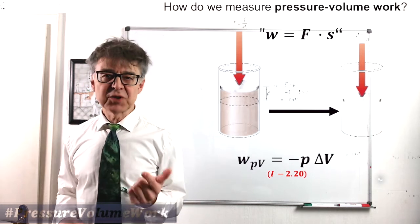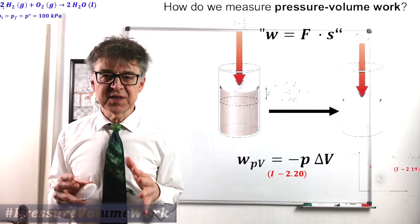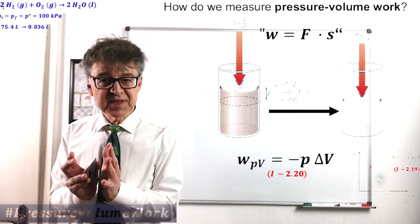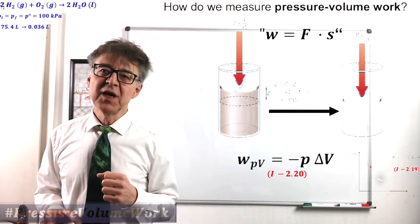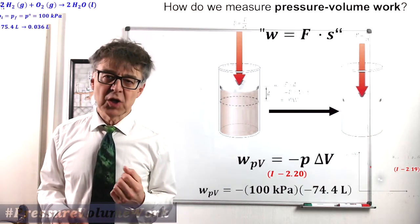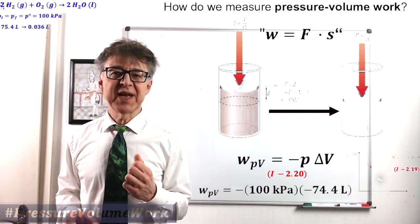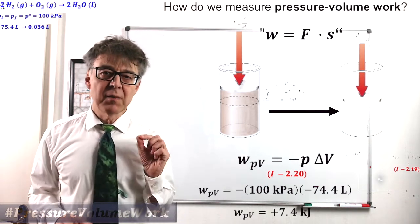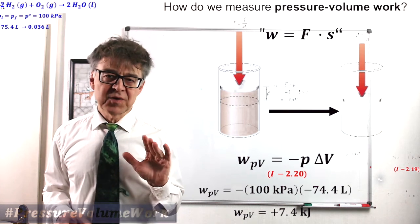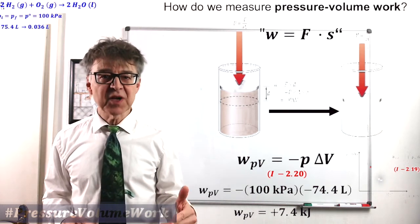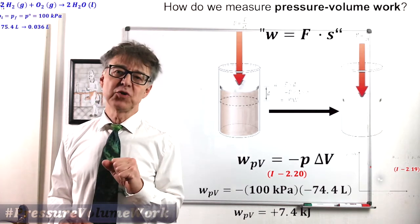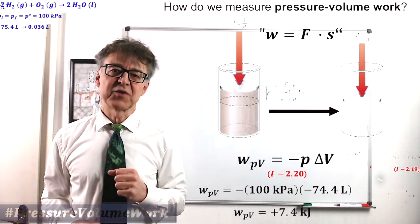In the oxyhydrogen reaction, volume decreases from almost 75 liters to 36 milliliters. So delta V will be negative 75 liters. With an external pressure of 100 kilopascals, we end up with PV work of plus 7.4 kJ. During the oxyhydrogen reaction, the atmosphere compresses the system, adding 7.4 kJ of work on it, so to speak, free of charge.